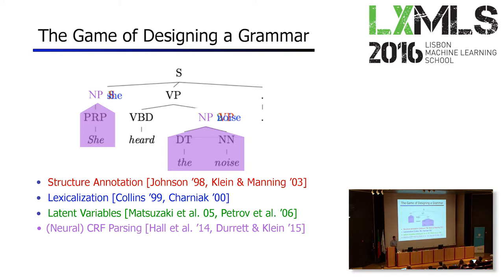The game of designing a grammar is to take the tree bank that the linguists labeled and enrich it with information that makes it easier for computers to predict the structures. A very simple way is structural annotation — annotating with parent information, like 'noun phrase under a sentence symbol' versus 'noun phrase under a verb phrase.' Mark Johnson did this very soon after Eugene Charniak published his parser, and Klein and Manning extended the idea.